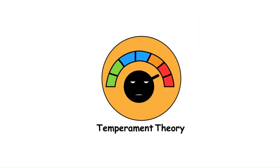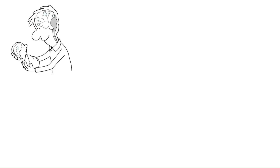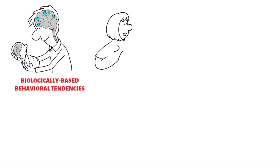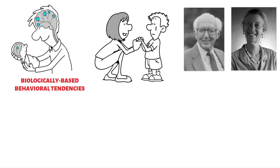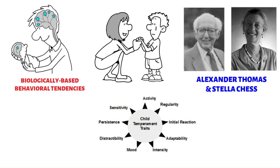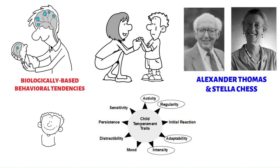Temperament Theory suggests that individuals have innate, biologically-based behavioral tendencies that influence their emotional responses and personality traits from infancy. Alexander Thomas and Stella Chess identified nine temperamental traits — including activity level, rhythmicity, adaptability, and intensity — which contribute to individual differences in behavior and development.